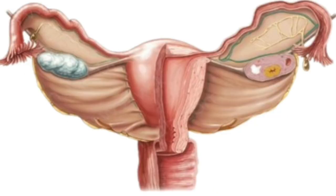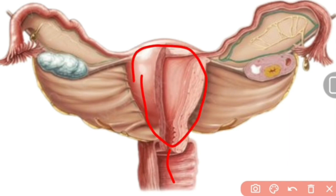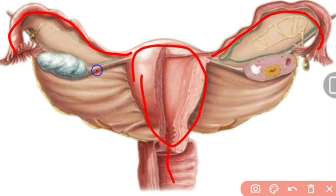This figure shows the internal reproductive organs of a female, which include the vagina, uterus, two fallopian tubes, and one pair of ovaries.